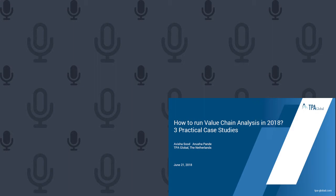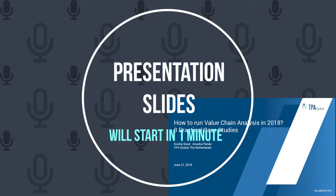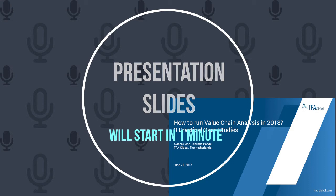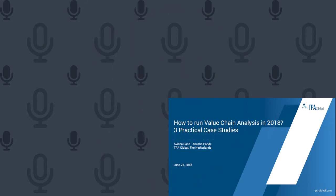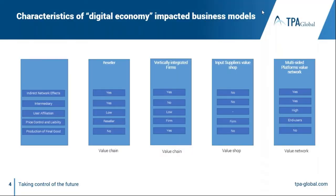As a result of digital economy, we can see four digital business models: reseller, vertically integrated firms, input suppliers, and multi-sided platforms, also known as value networks. For reseller and vertically integrated forms, value chain is the appropriate framework. For input suppliers, value shop is the most appropriate way to see where the value lies. For multi-sided platforms, it is value network, not a value chain, that best describes the business model.